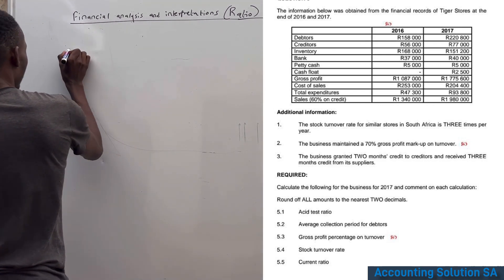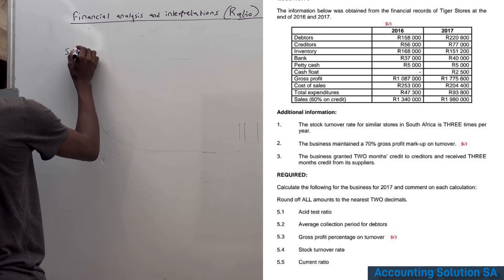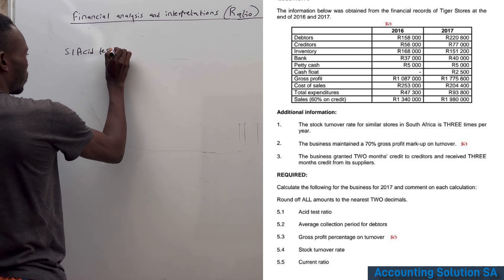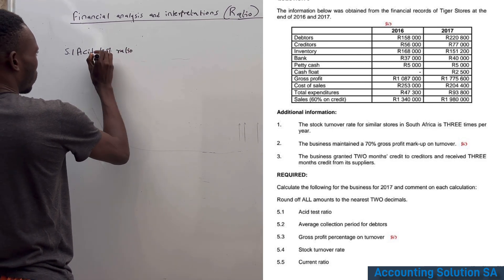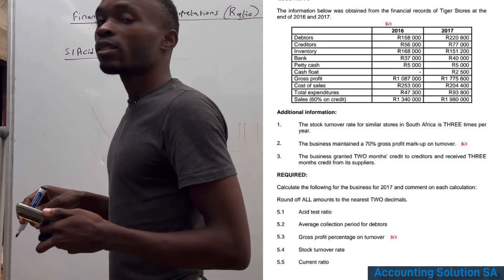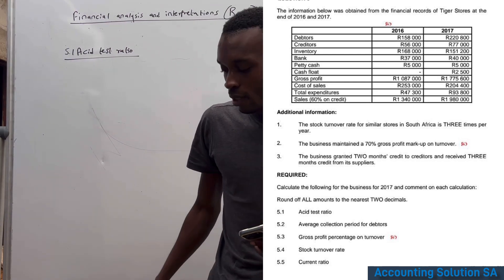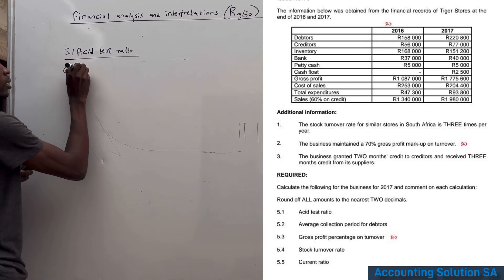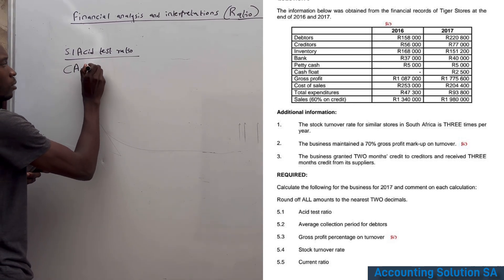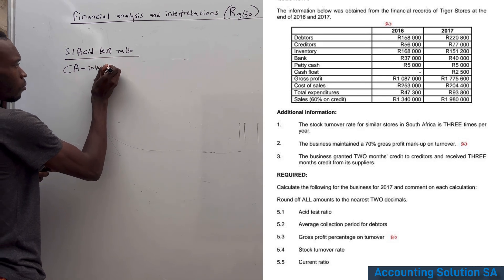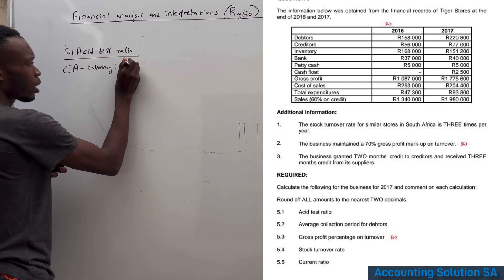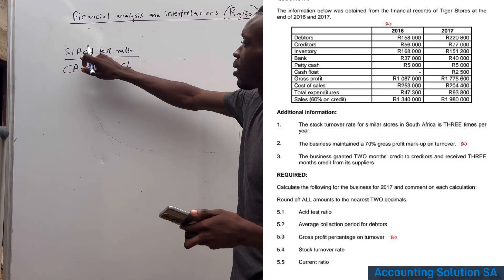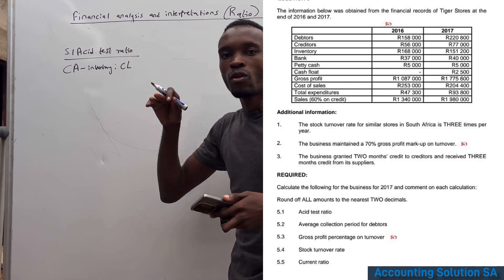Question 5.1 asks us to calculate the acid test ratio. The first step is to lay down the formula: current assets minus inventory, divided by current liabilities.